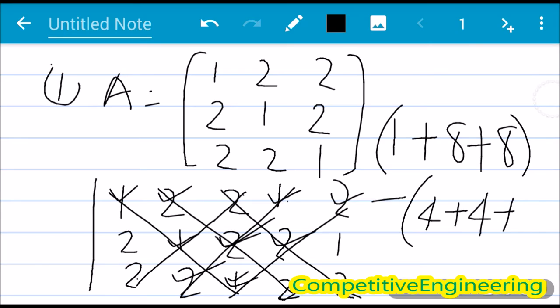That is 4. So what is this? 8 plus 8 plus 1, that is 17, minus 12, that is 5.